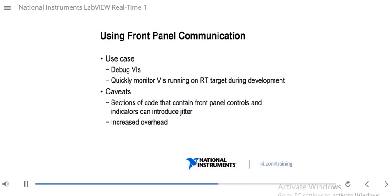Front panel communication is great to interact with and debug your RT VI, and you can quickly monitor VIs on the RT target during development. However, there are some caveats. Sections of code in your RT VI that contain front panel controls and indicators can introduce jitter, because extra processing is required to send those values from your RT target up to your host computer front panel. So if you need deterministic code, you wouldn't want any front panel controls or indicators in those sections. Additionally, there's increased overhead with this method.